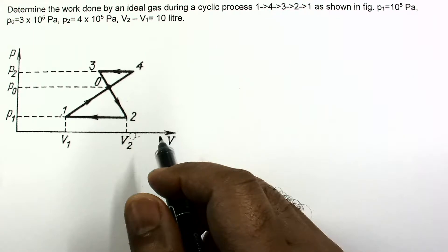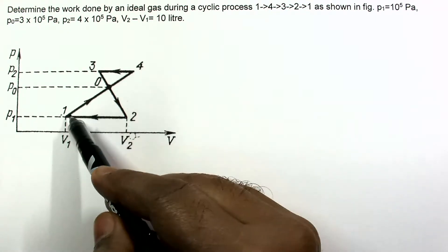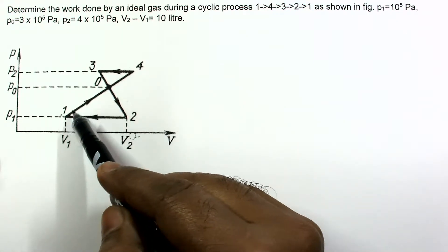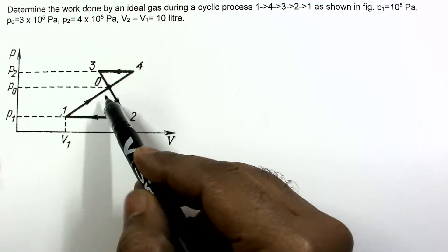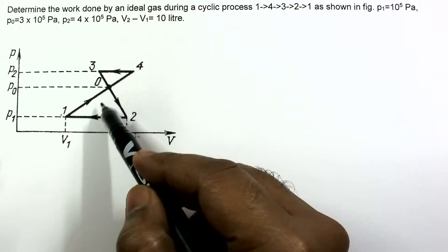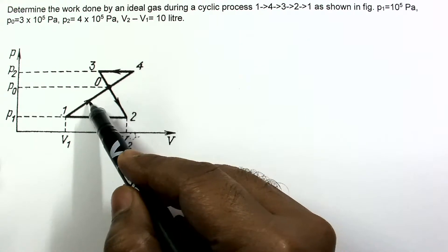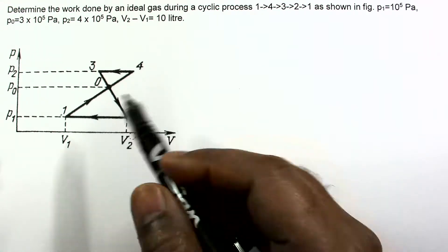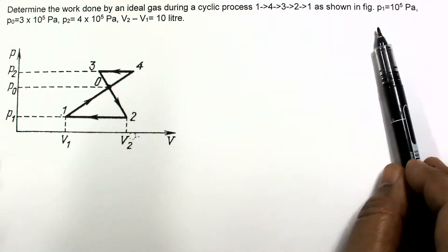Now the work done for a cyclic process is equal to the area of this loop, and it consists of two loops. We can take it as two loops, one of the loop is this.